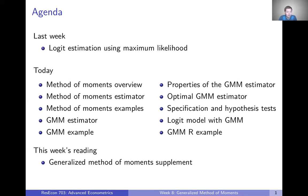We're going to start with just an overview of the method of moments, then talk about the method of moments estimator and give some examples. Then we'll jump to the more general form, the generalized method of moments, and talk about that estimator and an example, then talk about some properties of that estimator, the optimal GMM estimator, and some specification and hypothesis tests you could do once you've estimated a model using GMM. Finally, we'll talk about how to actually estimate the logit model using GMM estimation, with an example in R that we'll talk about in class.